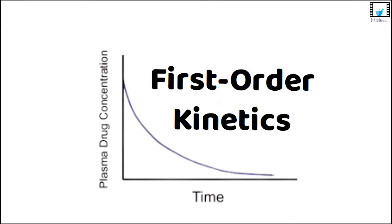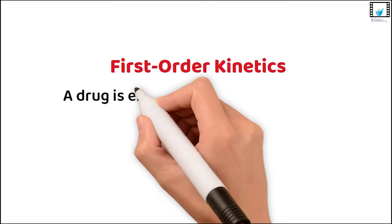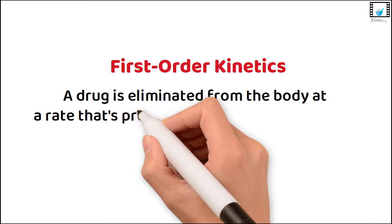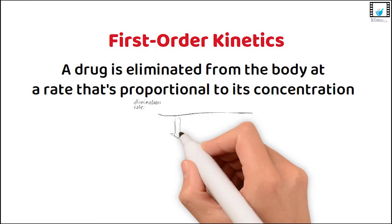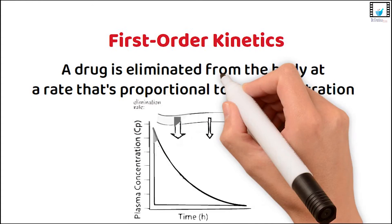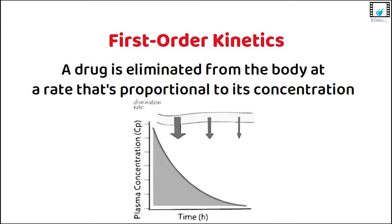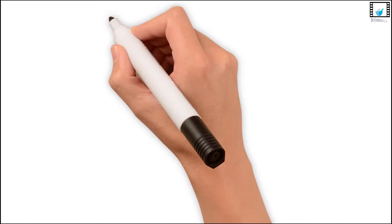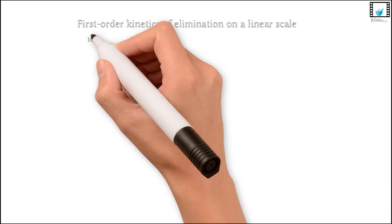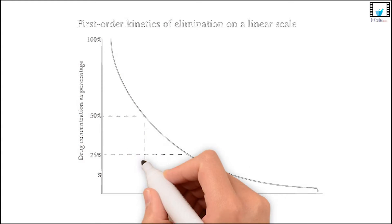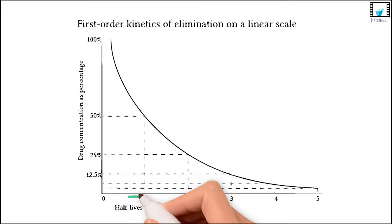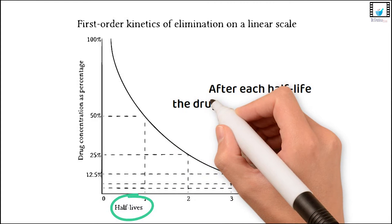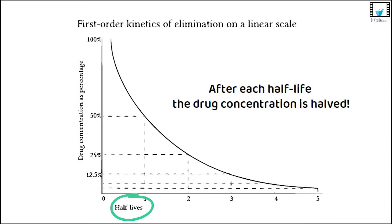Let's start with first-order kinetics. This means that a drug is eliminated from the body at a rate that's proportional to its concentration. As the drug concentration goes down, the elimination rate slows down too. The graph of drug concentration over time in first-order kinetics typically shows an exponential decay pattern, with a half-life that stays constant — meaning after each half-life, the drug concentration is halved.